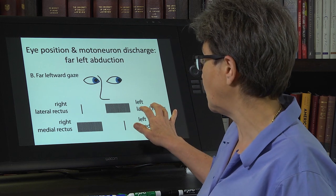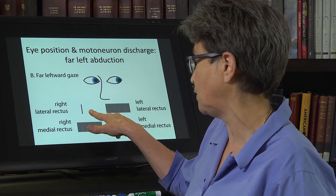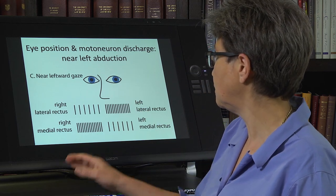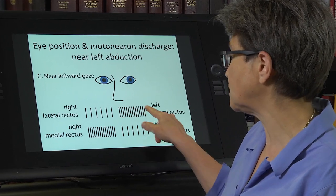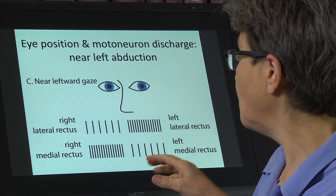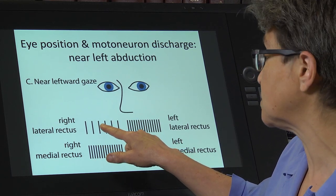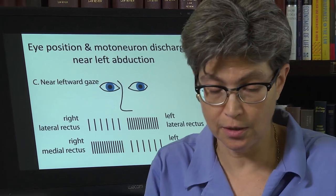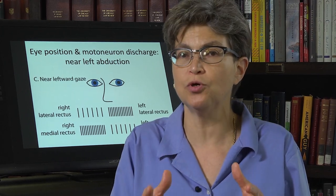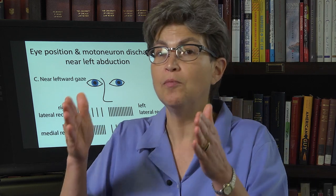So there's maximum excitation in the left lateral rectus and right medial rectus, and relaxation of the other two muscles. For a position in between, there's increased activity in the agonist muscles — the muscles pulling the eye leftward — but there's not a full silencing of the other motor neurons and their innervated muscles. This is a much more balanced activity across the muscles. The bottom line is that in order to maintain any position, there has to be supporting motor neuron discharge.